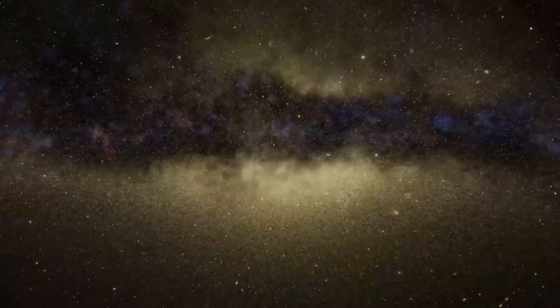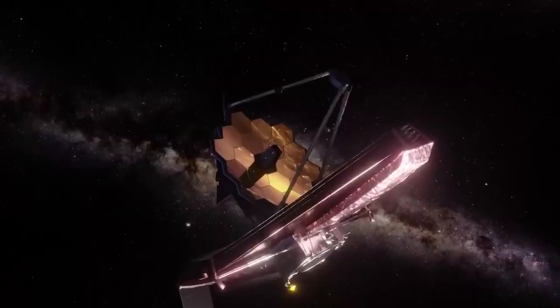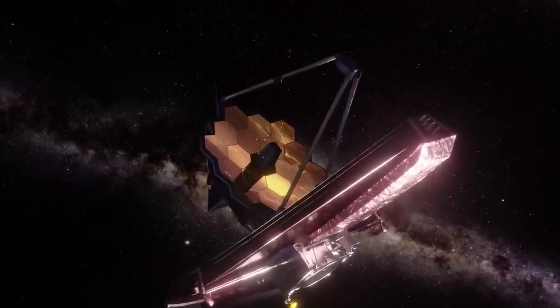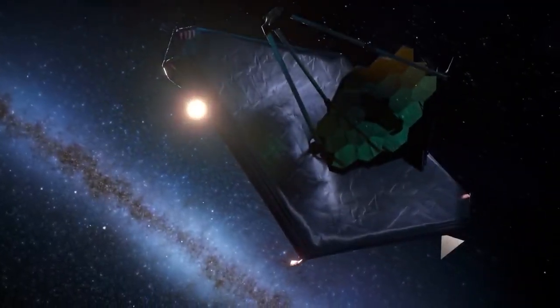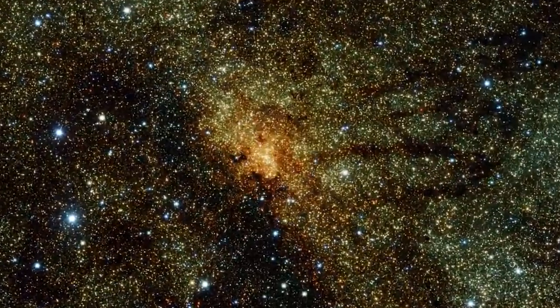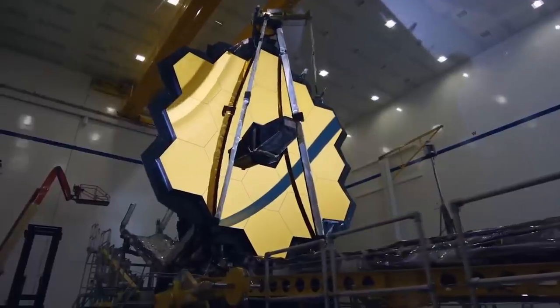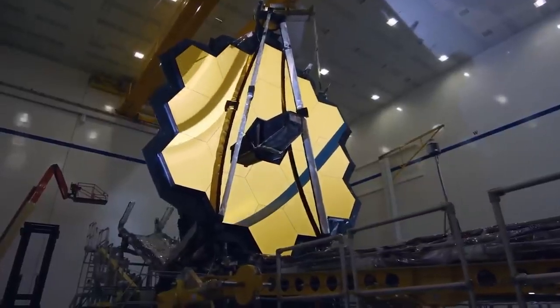Scientists have noted that additional research would be required to better understand how and why this invisible barrier exists in the center of our galaxy and that they would require the assistance of the James Webb Telescope to accomplish this. The James Webb Telescope has been targeted and designed to observe the behavior of Sagittarius A, which has proven challenging to investigate with previous lesser telescopes.